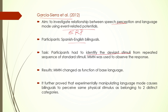The participants were Spanish-English bilinguals and they had to identify the deviant stimuli from a repeated sequence of standard stimuli. They looked at the MMN — mismatch negativity — a commonly utilized signal in ERP that looks at mismatches. When you are listening to a series of auditory stimuli, such as a series of phonemes, and one or two of those phonemes are not part of the language you know, there is a mismatch. If such a mismatch occurs in the stimuli, we will see the MMN effect in the ERP signal.